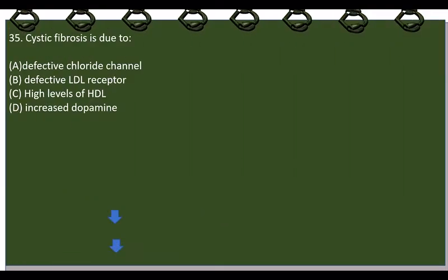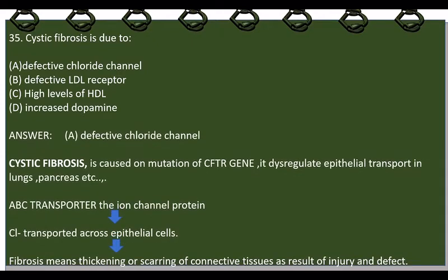Cystic fibrosis is due to? The answer is A, defective chloride channel. Cystic fibrosis is caused by mutation of the CFTR gene. It dysregulates the epithelial transport in lungs, pancreas, and every internal organ, since epithelial cells are present in all internal organs. On dysregulation it creates a massive disease.